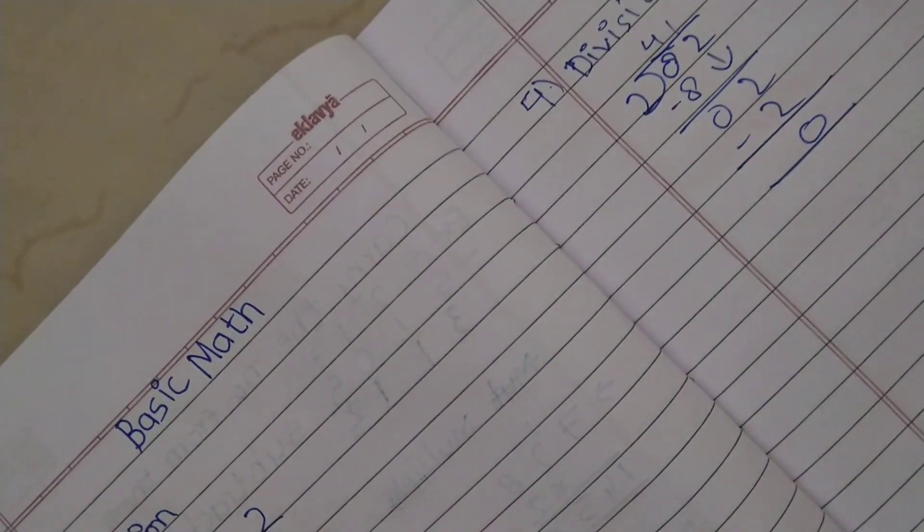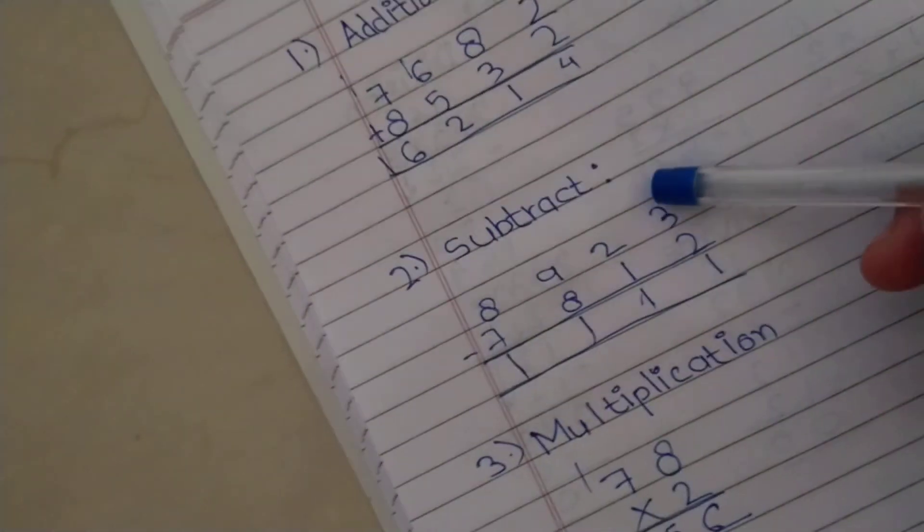So this is called the division. This is the addition, subtraction, multiplication, and division.